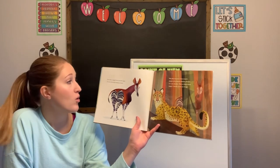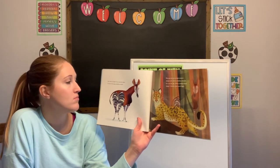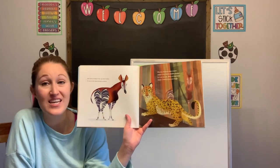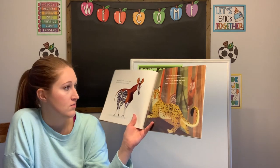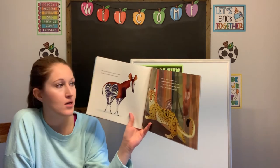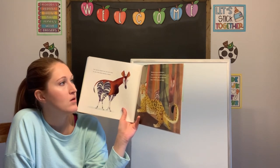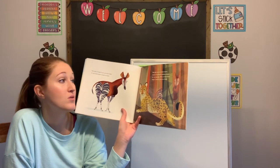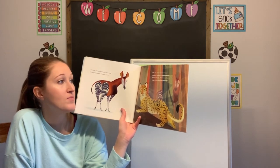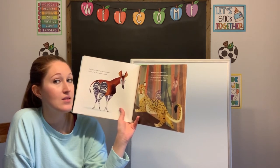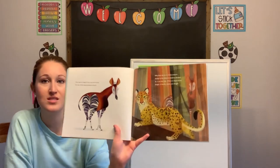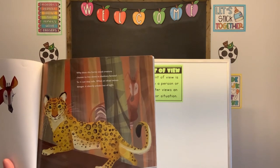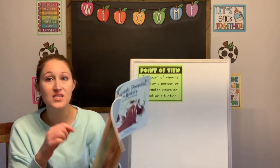Ever seen an okapi? I think it's okapi. It's one of the shyest animals on earth — I just saw one of these on TV the other day at the zoo. Why does this horse-sized creature choose to live alone in shadowy forests? So it can stay safe. When an okapi senses danger, it silently sneaks out of sight. Can you see him in the picture? He almost looks like he's camouflaged.